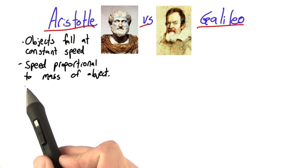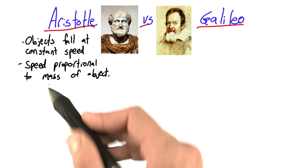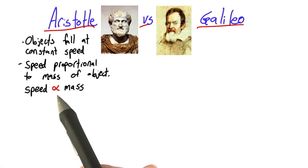Now, what does this mean, speed proportional to mass? It means that if you double the mass of an object, you double the speed. If you triple the mass, you triple the speed. We can write this proportionality with this funny-looking symbol here.